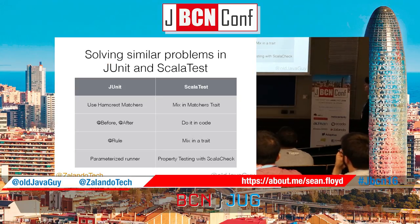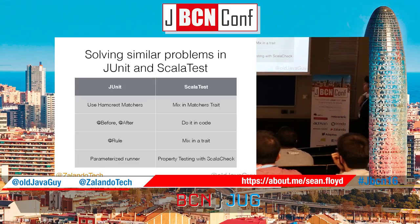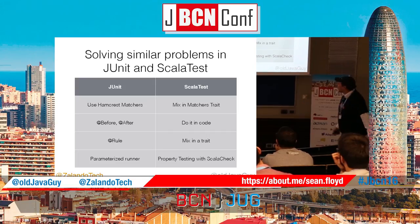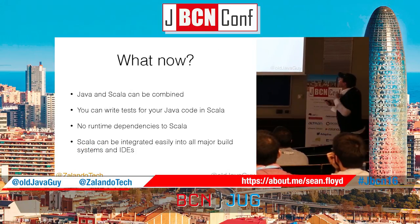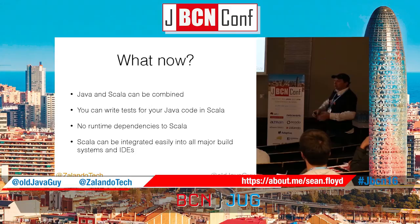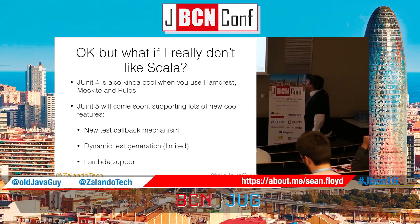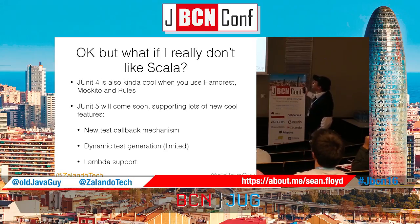Here's a quick comparison of Java versus Scala approaches: in JUnit use Hamcrest matchers; in ScalaTest mix in Matcher traits. Before/after lifecycle hooks are done in code in ScalaTest. Reusable code you'd put in a JUnit rule, you put in a trait in Scala. Instead of parameterized runners, you go with property testing. Java and Scala can be combined in one project — you can have production code in Java and tests in Scala, or production code in both. JUnit 5 will come soon with a new test callback mechanism, the ability to create tests dynamically, and Lambda support in assertions.